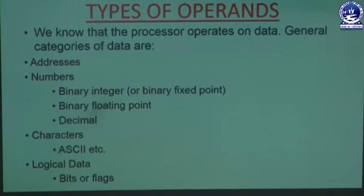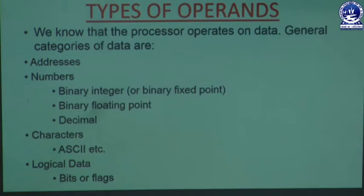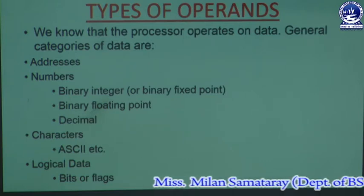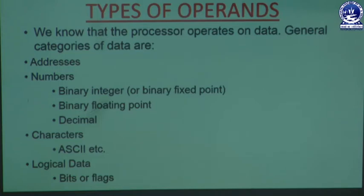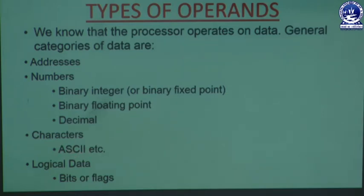First we will discuss about different types of operands. The processor basically operates on data, and general categories of data are addresses and numbers. Numbers are divided into different types like integer, floating point, decimal, and hexadecimal formats. We have already discussed how numbers are converted from one form to another. Basically the data understood by the machine is in the form of binary values, whether it is integer or floating point. The next category of data is characters, which are basically ASCII — American Standard Code for Information Interchange — which generates a numeric value for every character.